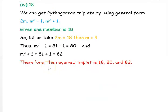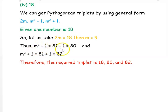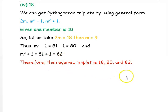For the number 18, we take 2M = 18, giving M = 9. Then M²−1 = 81−1 = 80, and M²+1 = 81+1 = 82. Therefore, the required triplet is 18, 80, and 82.